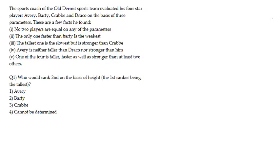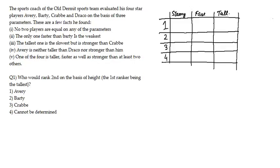So let's make a table first. In this table, rank 1 represents the strongest person and rank 4 represents the weakest person. Similarly, rank 1 is the fastest and rank 4 is the slowest.